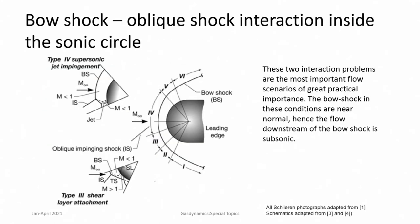Moving to shock-shock interaction very close to or within the sonic circle — this is in regions 3 and 4, called type 3 and type 4. Here the bow shock is of very high strength, and the flow downstream of the bow shock is subsonic. That is quite different from type 1, 2, 5, and 6, which had supersonic flows downstream. They produce certain special features which create large changes on the body and as a result are of immense importance when looking at body design.